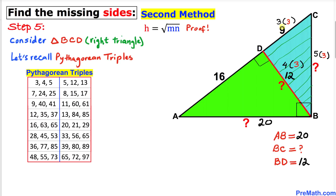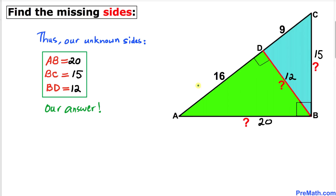Finally, let's focus on triangle BCD. We can see that 9 equals 3 times 3 and 12 equals 4 times 3. The 3-4-5 Pythagorean triple applies, so the unknown side is 5 times 3, which is 15. Therefore side BC is 15 units. Our unknown sides turned out to be BD equals 12, BC equals 15, and AB equals 20. Thanks for watching — please subscribe to the channel for more videos!